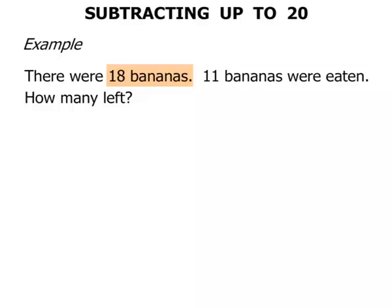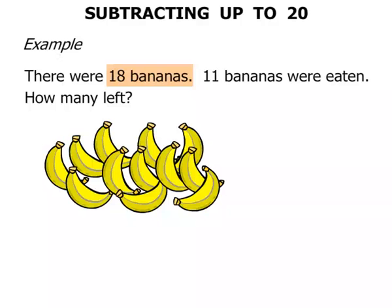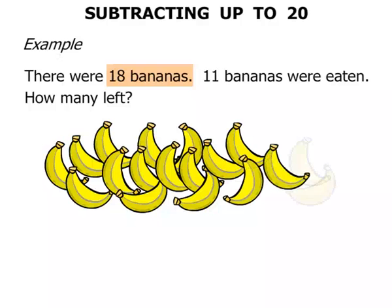Let's get them in groups of 2 though. 1, 2, 3, 4, 6, 8, 10, 12, 14, 16, 18. Alright, 18 yellow bananas.